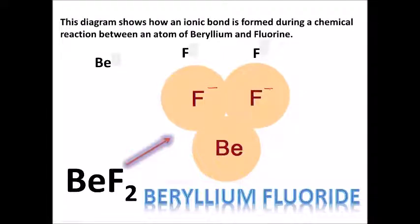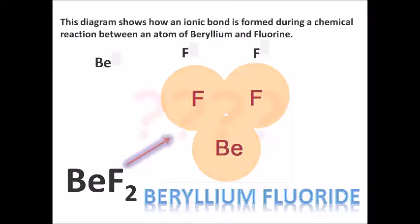The electric charge is exactly canceled out — the single negative charge on each fluorine atom canceled out the two positive charges of the beryllium atom. Now that they're canceled out, we have an electrically neutral formula unit of beryllium fluoride, BeF₂: one beryllium and two fluorines bonded together. The name of our compound is beryllium fluoride.